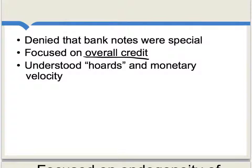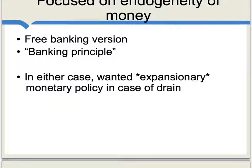The Banking School often thought that changes in monetary velocity were important for economic conditions, whereas the Currency School was more focused on the supply of banknotes per se. Rather than obsessing about laws for the control of the money supply, members of the Banking School tended to focus on the endogeneity of money — stressing that economic conditions come first and the money supply would follow from those. In all of these regards, members of the Banking School were in numerous ways more modern than members of the Currency School.